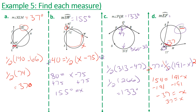Now we have arcs of 191 degrees and 37 degrees. Since there are 360 degrees in a circle, arc EF equals 360 minus 191 minus 37, which equals 132 degrees. So the measure of arc EF is 132 degrees.